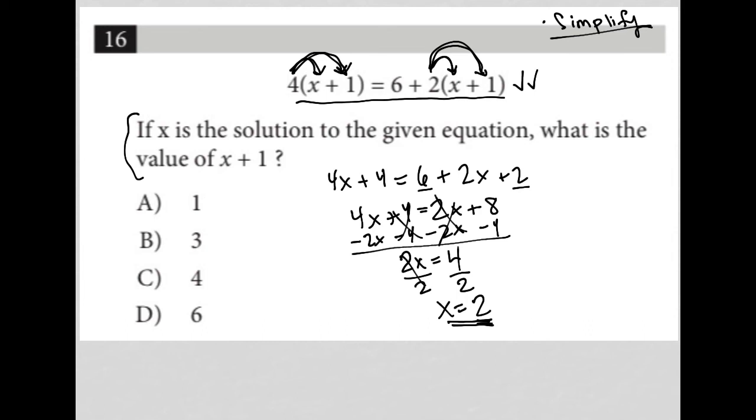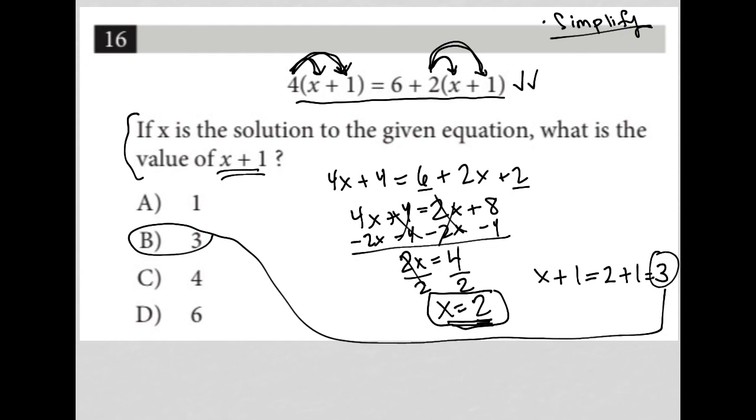This question says, if x is the solution to the given equation, which means we already know what that answer is—2 is the solution to the given equation. What is the value of x plus 1? If x equals 2, then x plus 1 equals 2 plus 1, which equals 3. Therefore, the correct answer here is choice B.